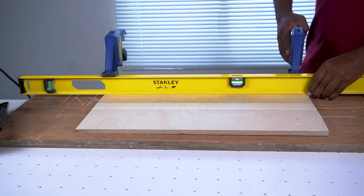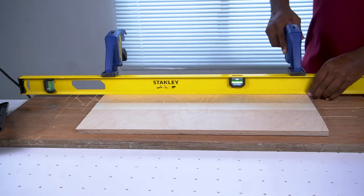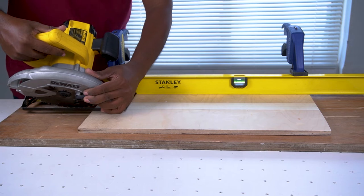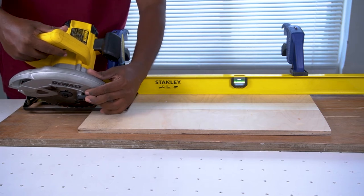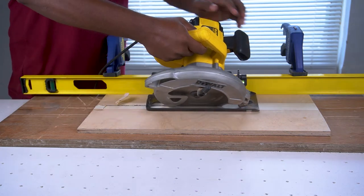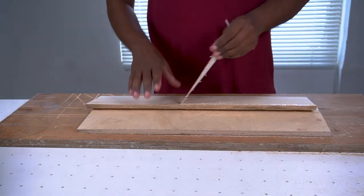Clamp a level or a speed square at the offset point to guide the circular saw in a straight line. Align the blade with the cut line. When the edge of the blade touches the offset point, the blade will fall on the cut line correctly. Begin cutting through the material and complete the cut. Remove the masking tape after.